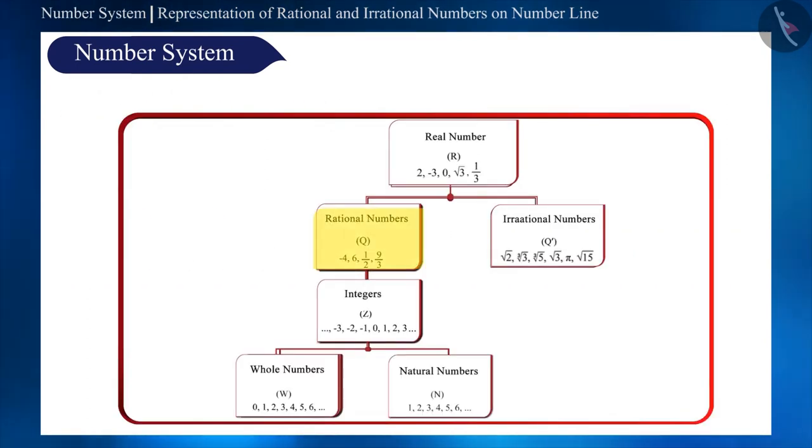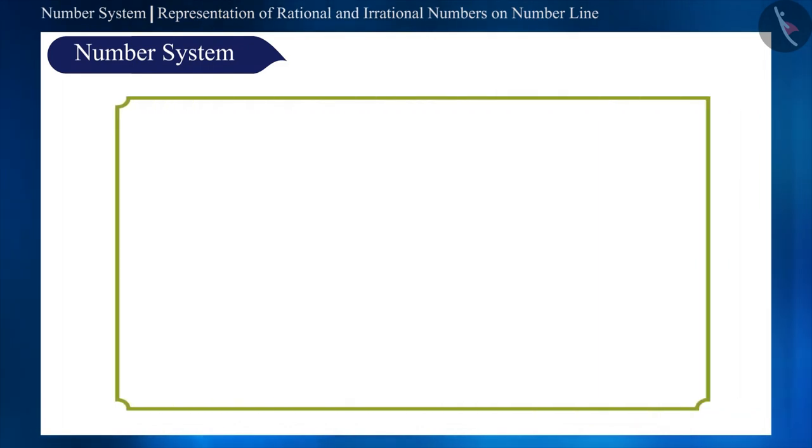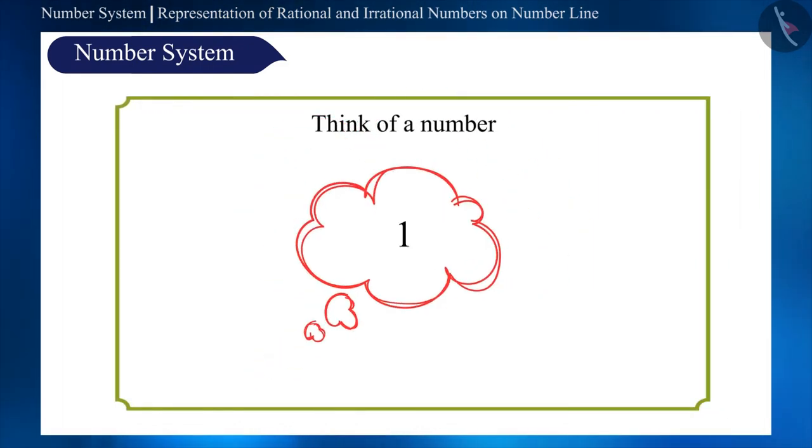We know that the collection of rational and irrational numbers together form real numbers. So if I ask you to think of any number, I cannot predict if the number chosen by you is a natural number, an integer, or a decimal number. But I can surely say that the number you thought of would be a real number.